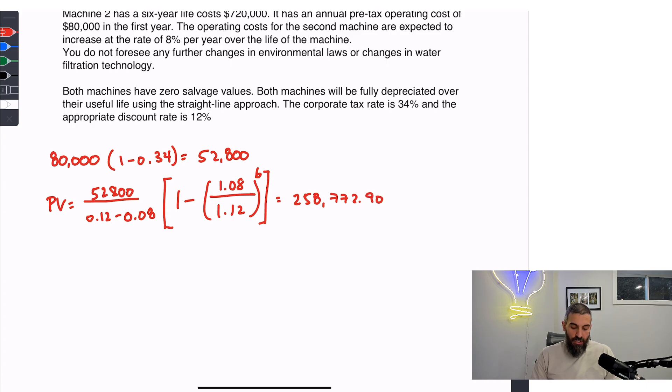Now for the depreciation. Once again, we'll take the entire cost of the asset, which is $720,000, and divide it by the six-year useful life. So we get $120,000 per year in depreciation before tax. So our tax shield would be $120,000 multiplied by 34%, the tax rate, which is $40,800.